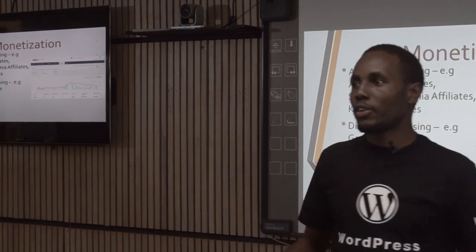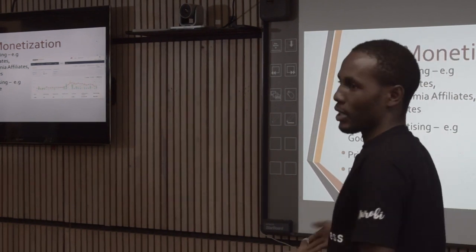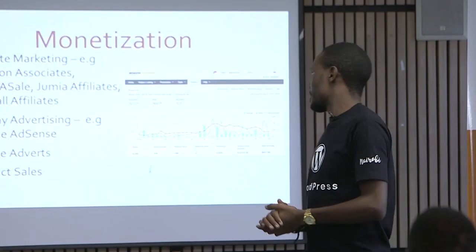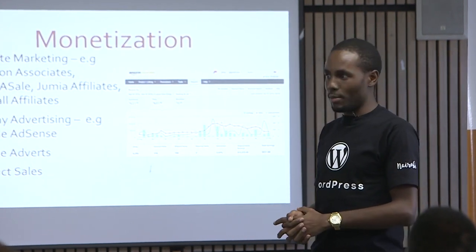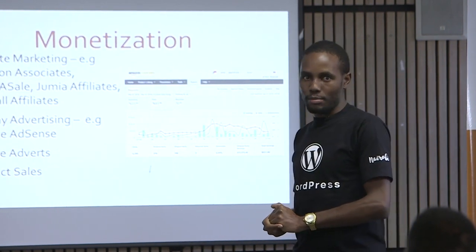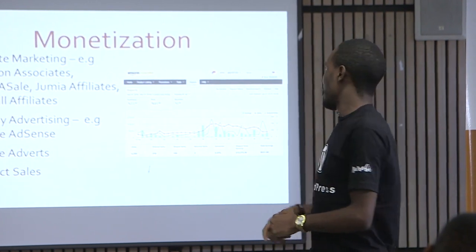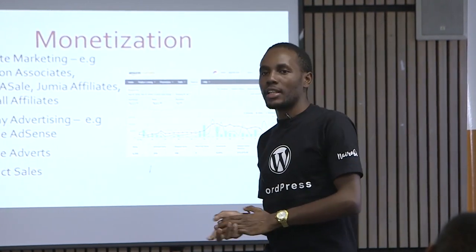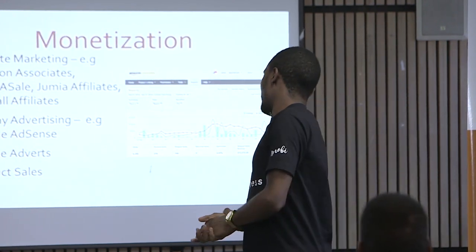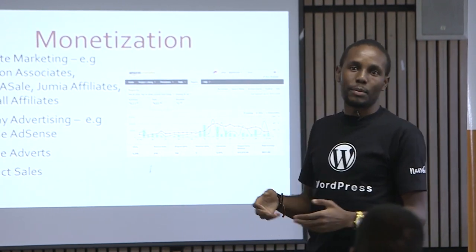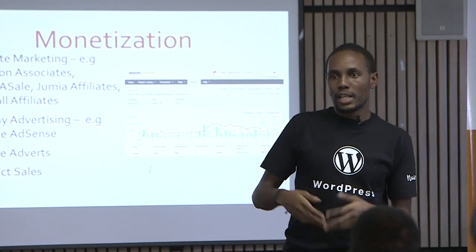When it comes to monetization — once you have your blog, done your SEO, and created content — here are some ways to make money. Google AdSense is display advertising that mostly applies to informational websites; you're paid per impression or per click. For niche sites featuring products, you apply to affiliate programs such as Amazon Associates, ShareASale, Jumia, or Kilimall if targeting local traffic. You can also do sponsored posts where people pay you to feature their content, or sell your own products directly from your blog.